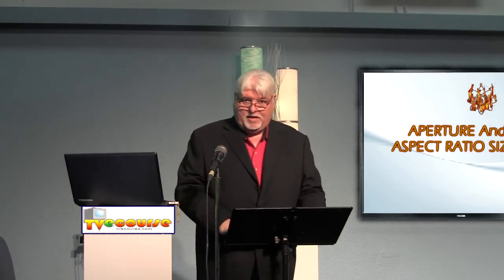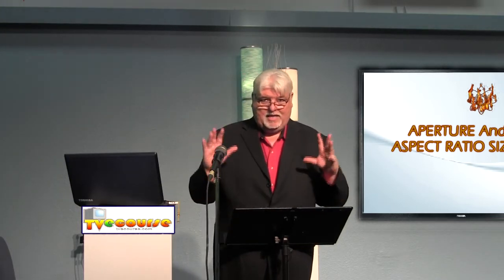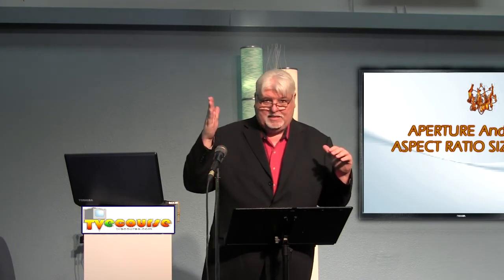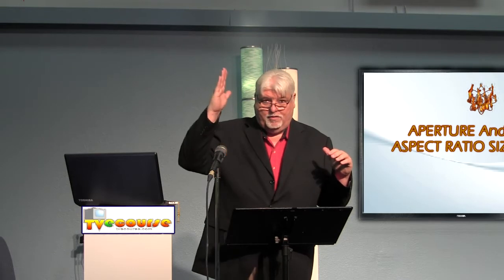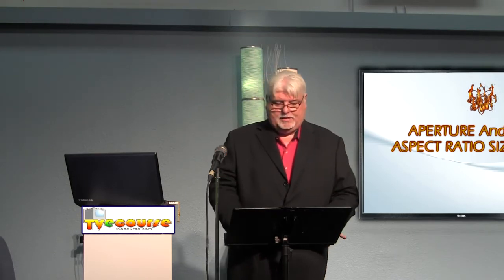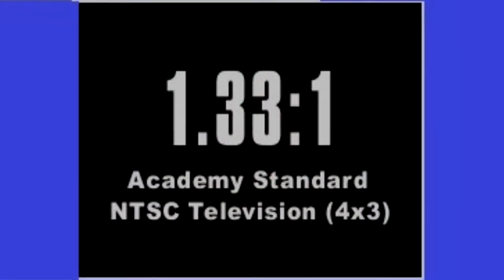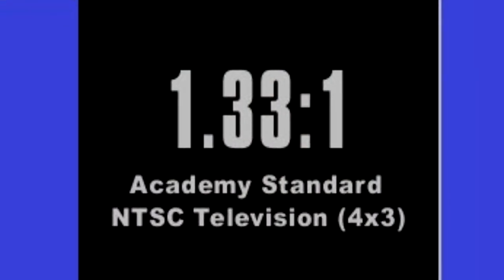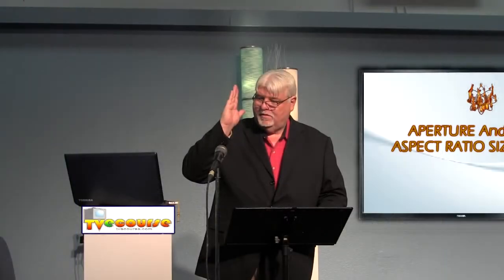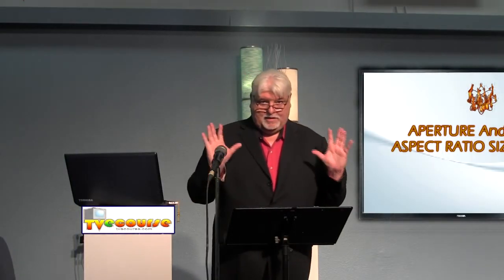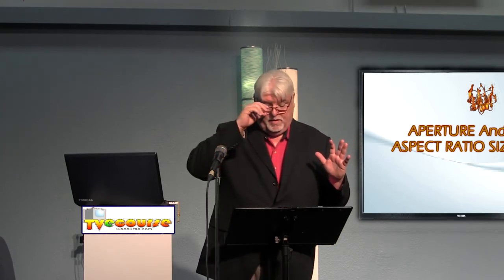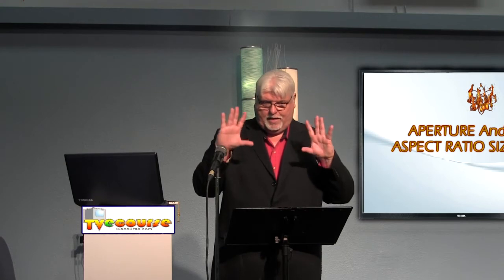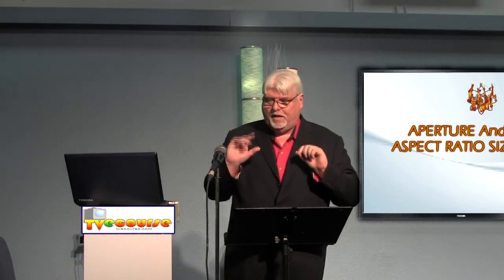Aspect ratio has to deal with the dimensions of the screen — not the actual size of the screen, but the relationship of the vertical to the horizontal. In 16 millimeter film, and also in broadcast television before digital HD came out, it was four by three: four units horizontal by three units vertical. So it was a little bit wider than it was tall, making a dimension that looked almost square, but a little bit wider.